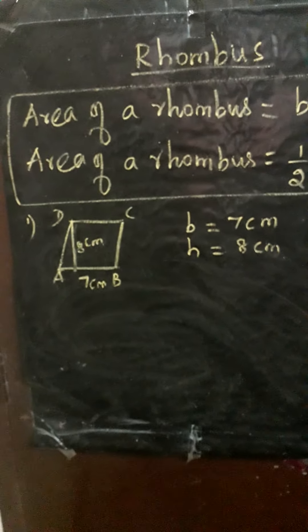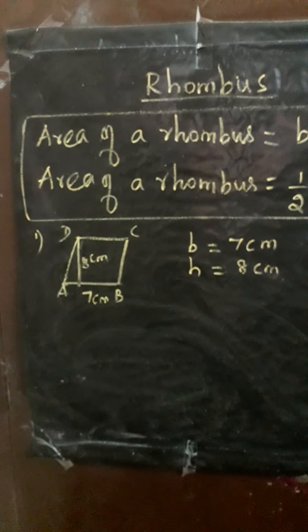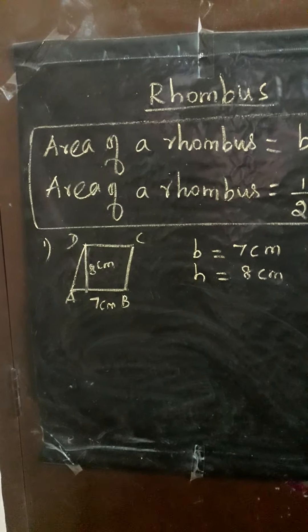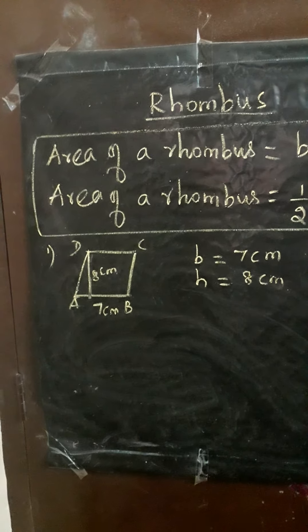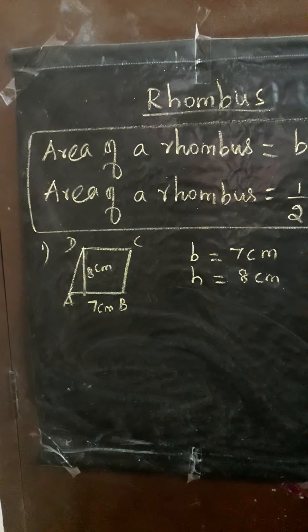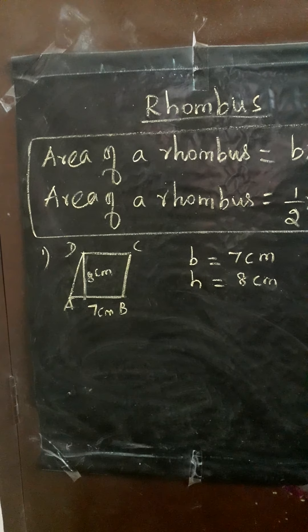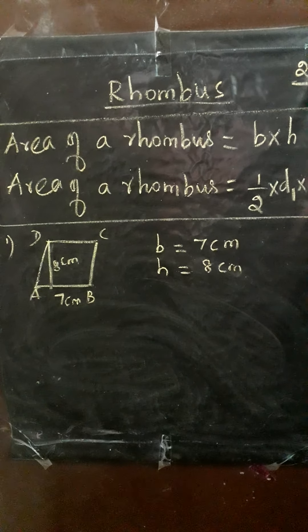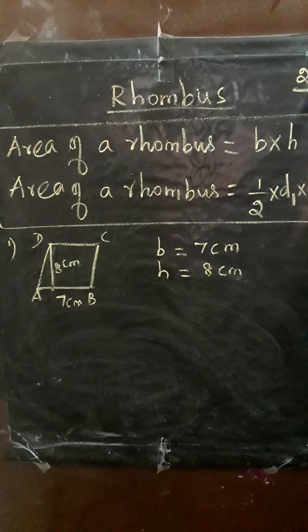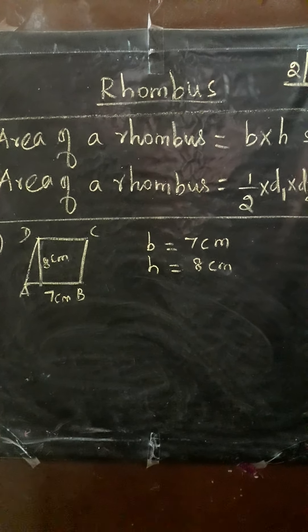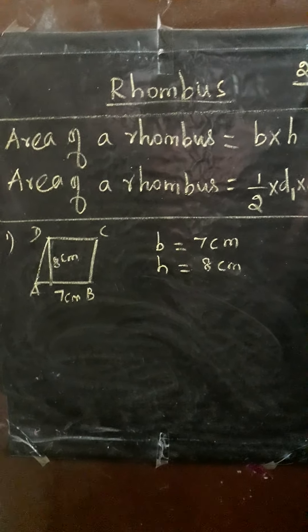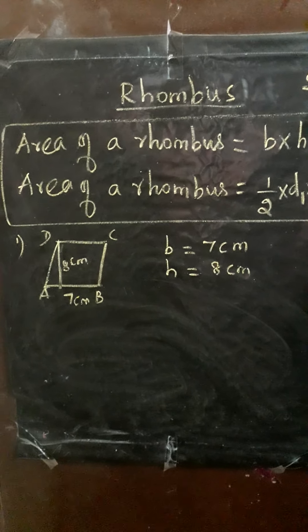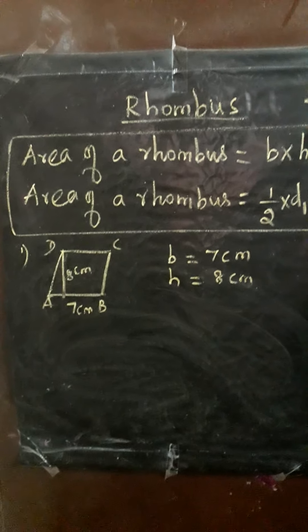Next, we do one sum. Here rhombus ABCD is given. Base of the rhombus is 7 centimetres and height of the rhombus is 8 centimetres. So you should write B equal to 7 centimetres and H equal to 8 centimetres. Now find the area of the rhombus.